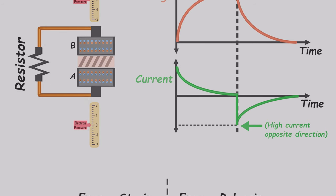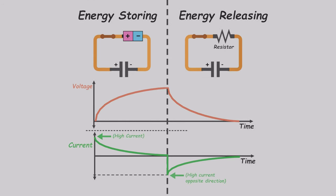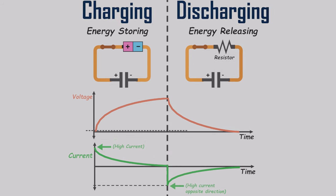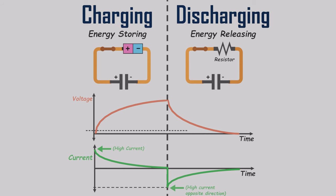Now that we have a basic understanding of capacitors, we can explore their behavior further. When we store energy in a capacitor, it is known as capacitor charging. Conversely, when we use the stored energy, it is termed as capacitor discharging. Let's continue our exploration.